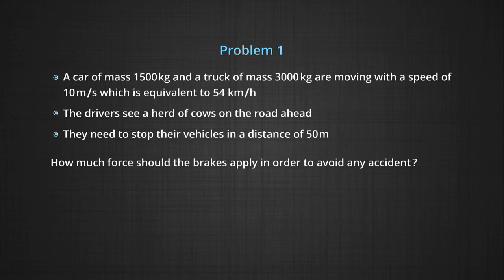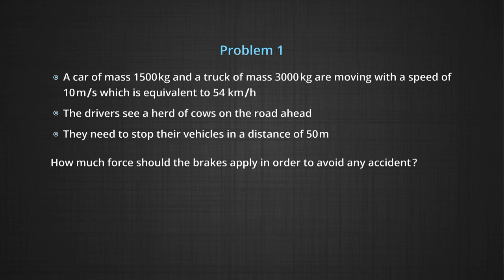Problem number 1: A car of mass 1500 kg and a truck of mass 3000 kg are moving on a straight road at speeds of 10 meters per second, equivalent to 54 kilometers per hour. The driver suddenly spots a herd of cows on the road and needs to stop the vehicle 50 meters away. How much force should the brakes apply in order to avoid any accident with the car or truck hitting the cows?